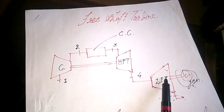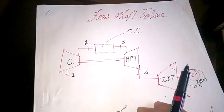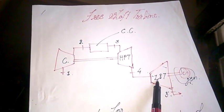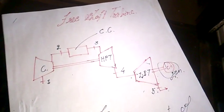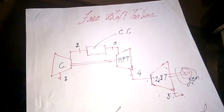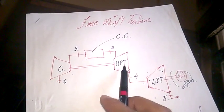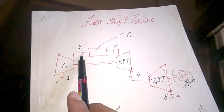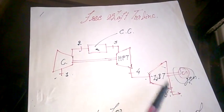As the name suggests — free shaft — there are basically two turbines: a high pressure turbine and a low pressure turbine. We take the power and generate the power from the low pressure turbine. The shaft of this turbine is not connected with the compressor, which is why it is called a free shaft turbine. In a gas turbine there is a compressor, then a combustion chamber, then the turbine. Air comes in, gets compressed, enters the combustion chamber where fuel is burned, and then goes straight to the turbine.